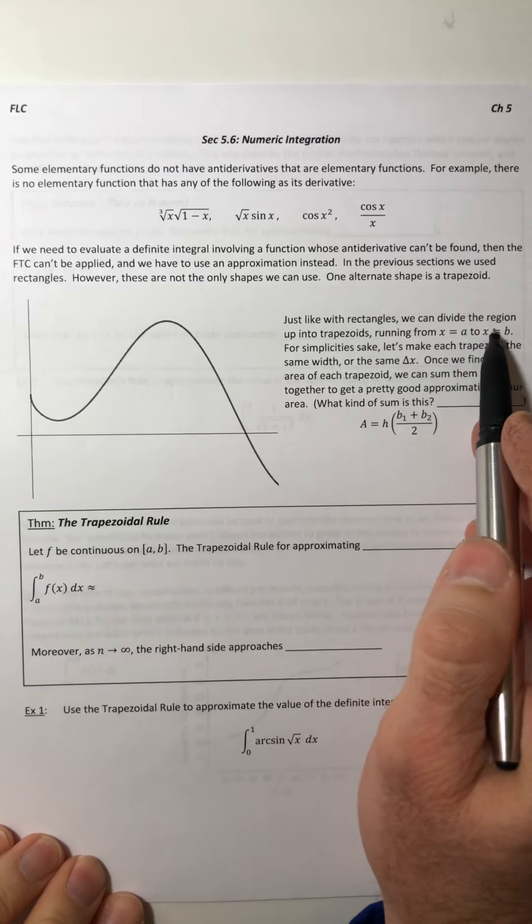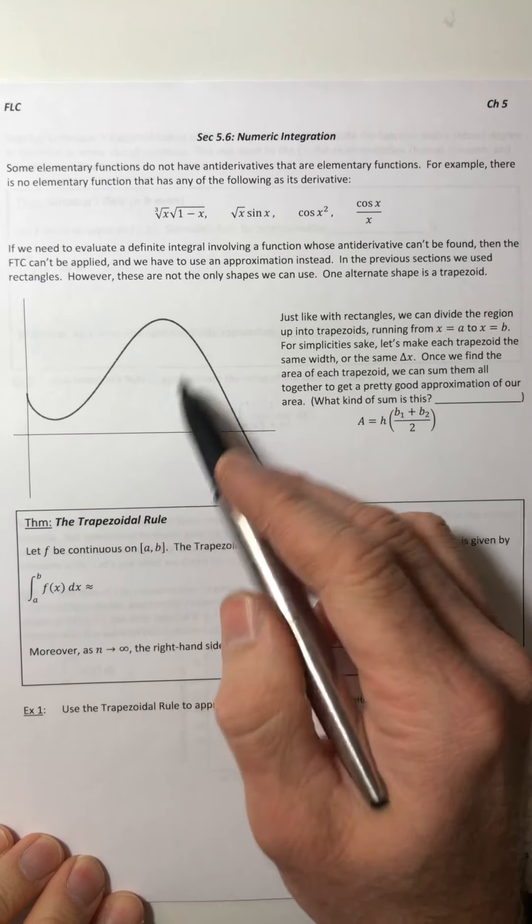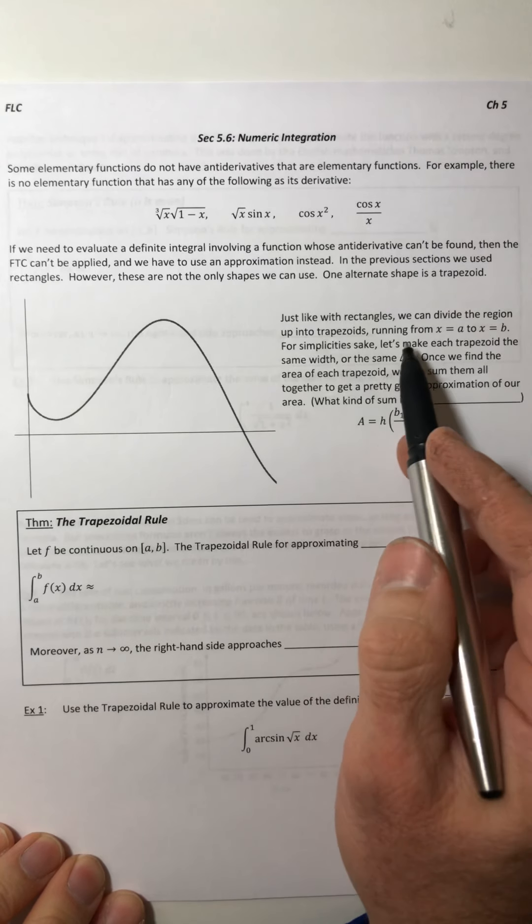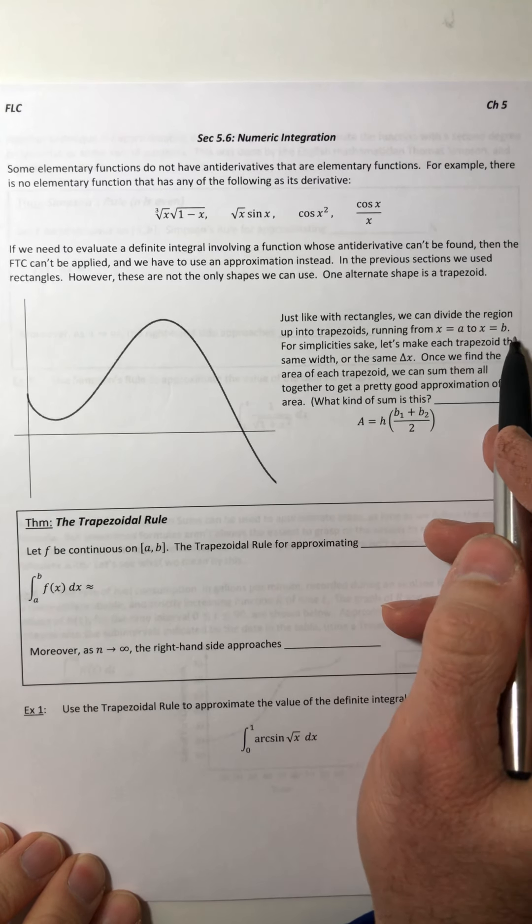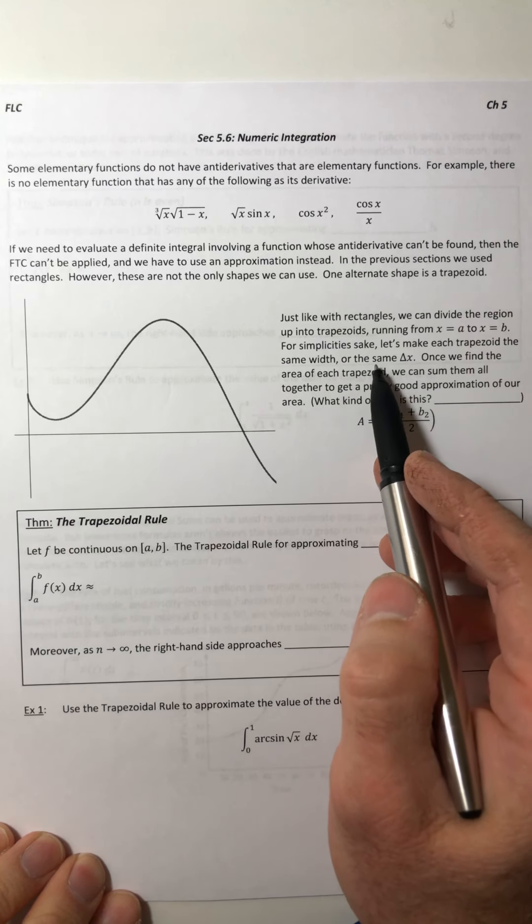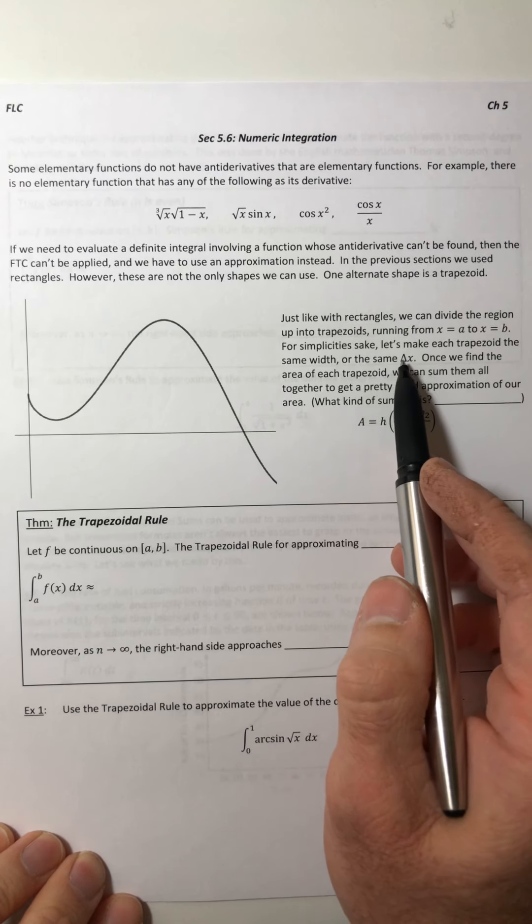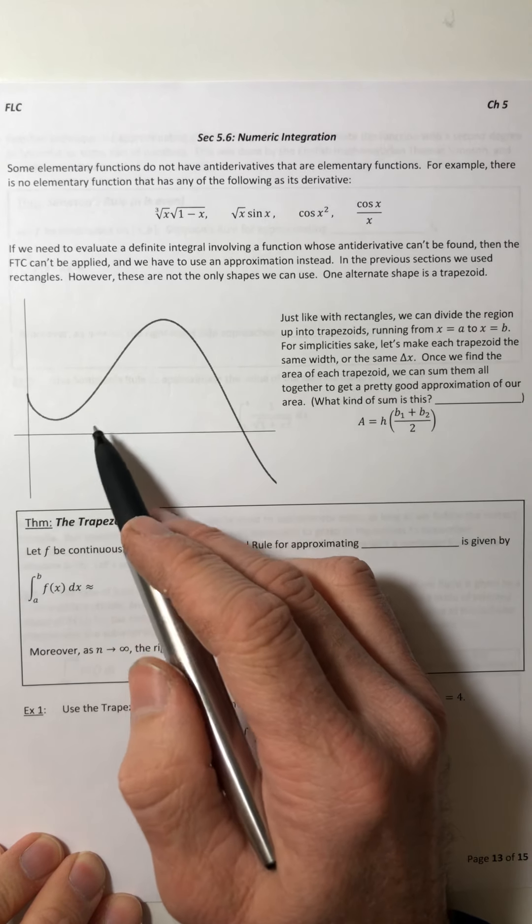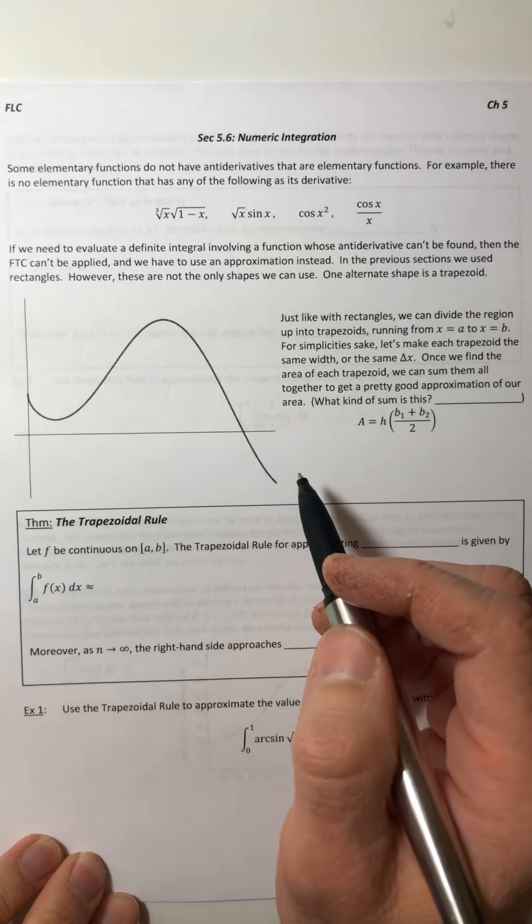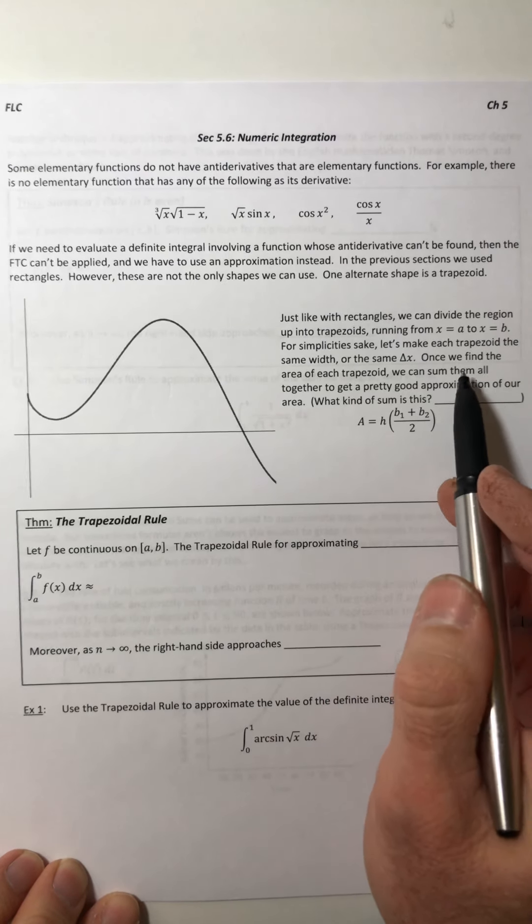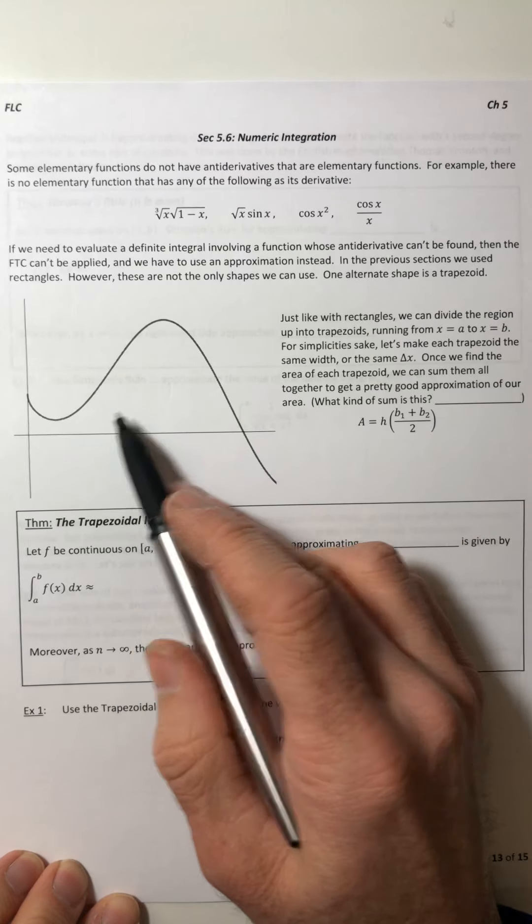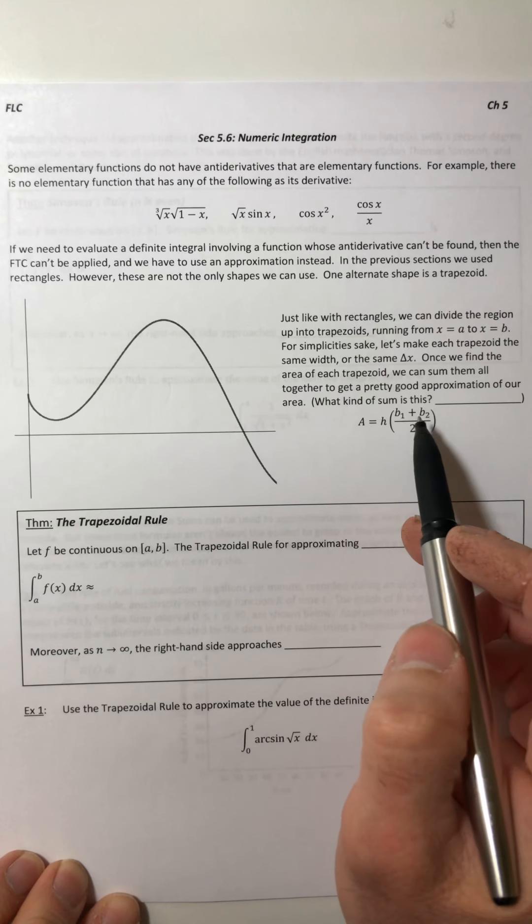Just like rectangles we can divide this region up into trapezoids going from x equals a to x equals b. And just like for the rectangles, each one of them is going to be the same width or the same delta x.